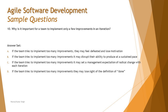Option B says: if the team tries to implement too many improvements, it may disrupt their ability to produce at a sustainable pace. I think that's more relevant. When you have contradicting options, you need to pick the one that talks about the process and goals — not something emotional or personal — but something related to the process and methodology.